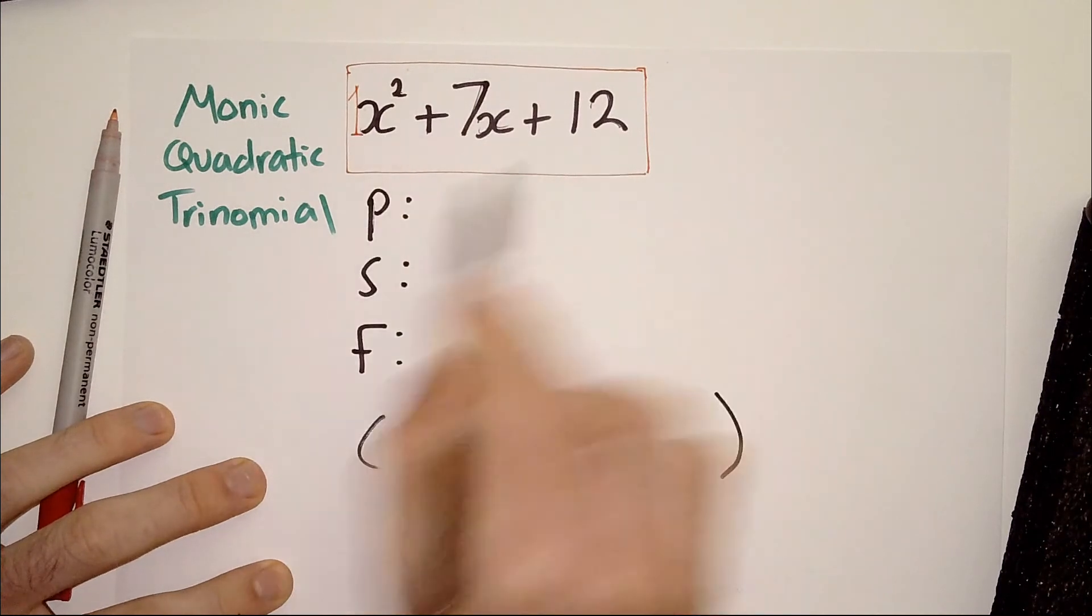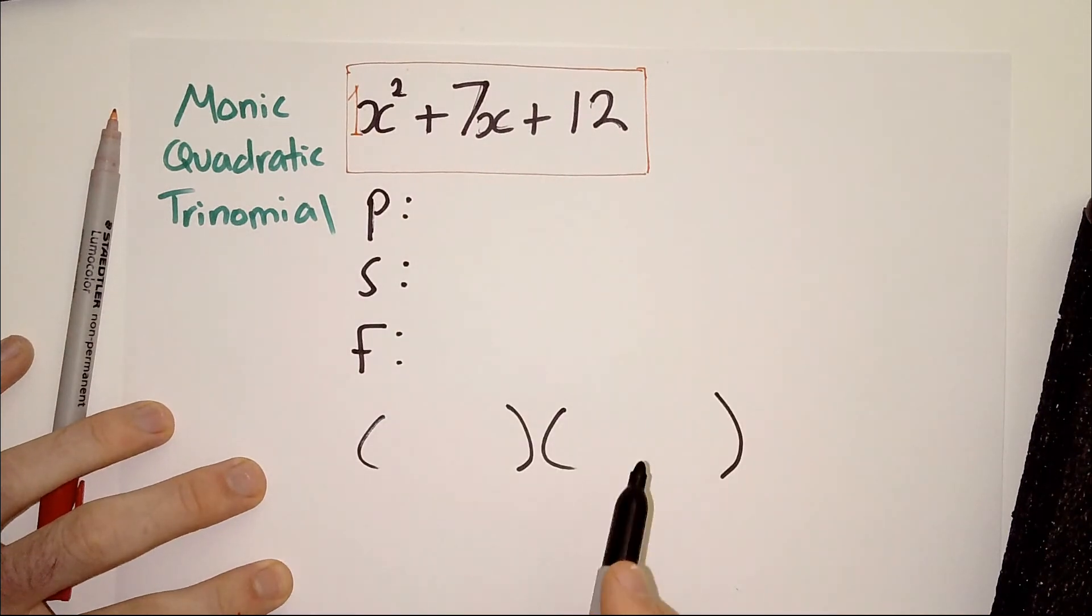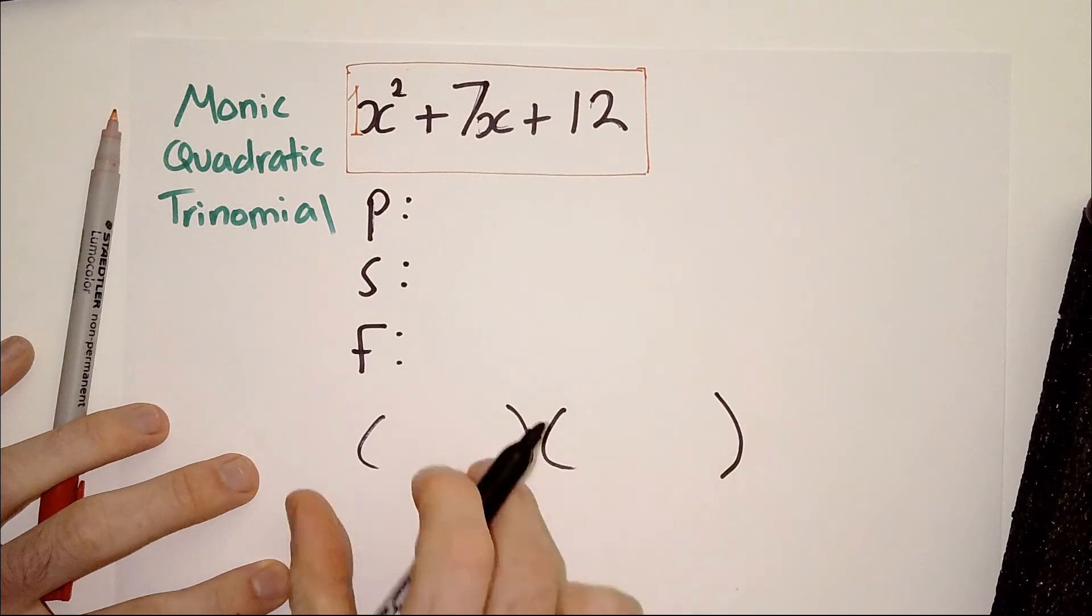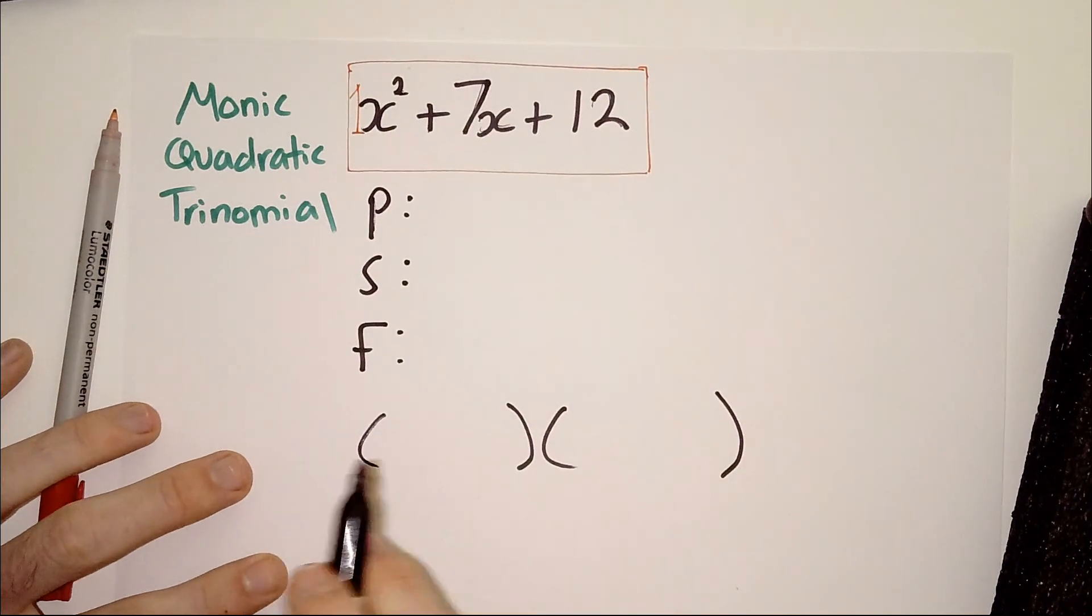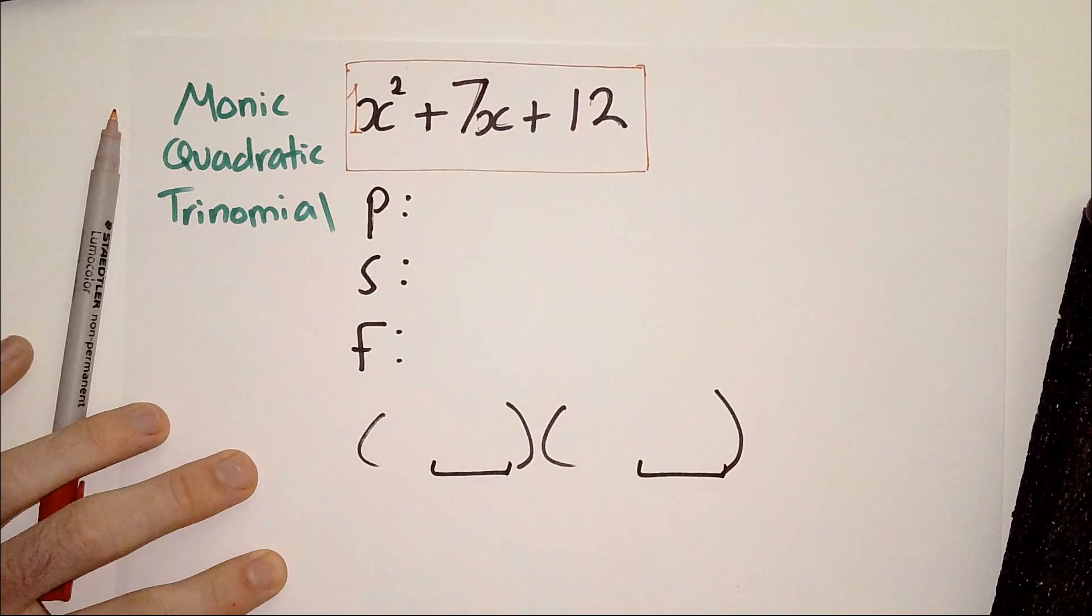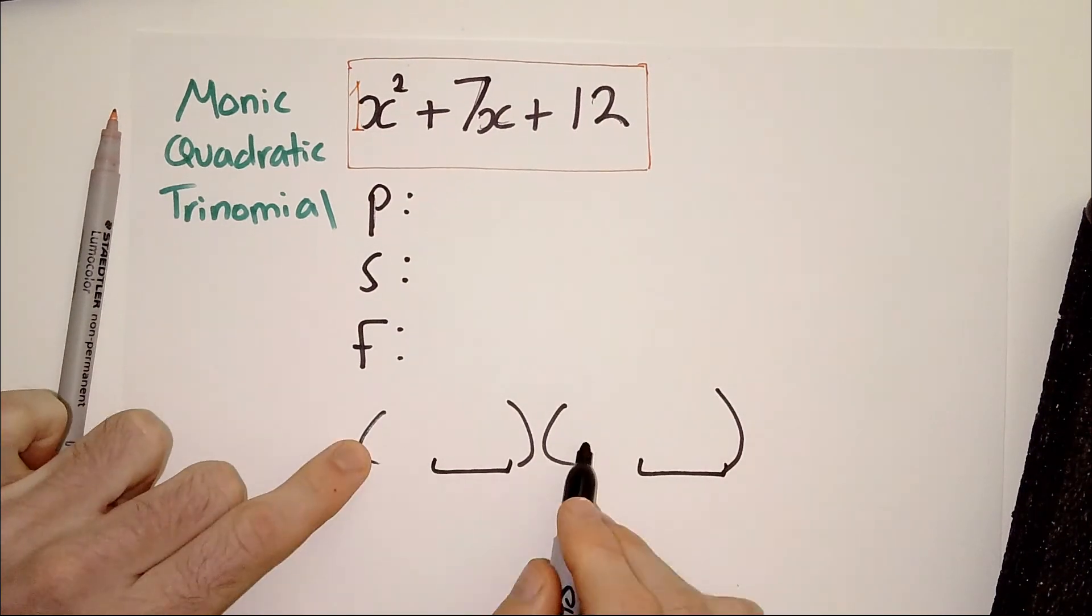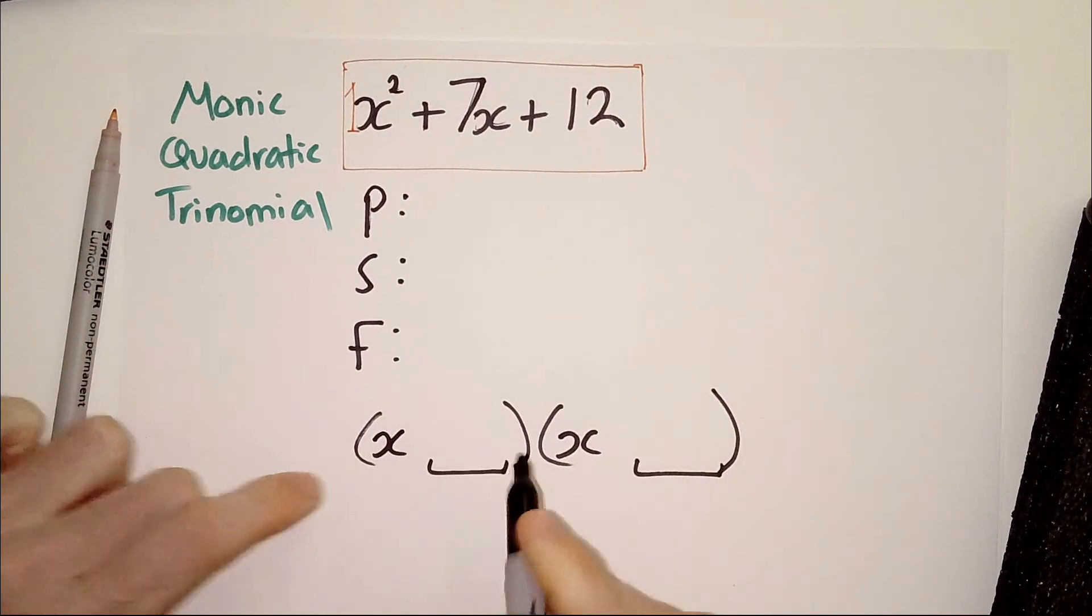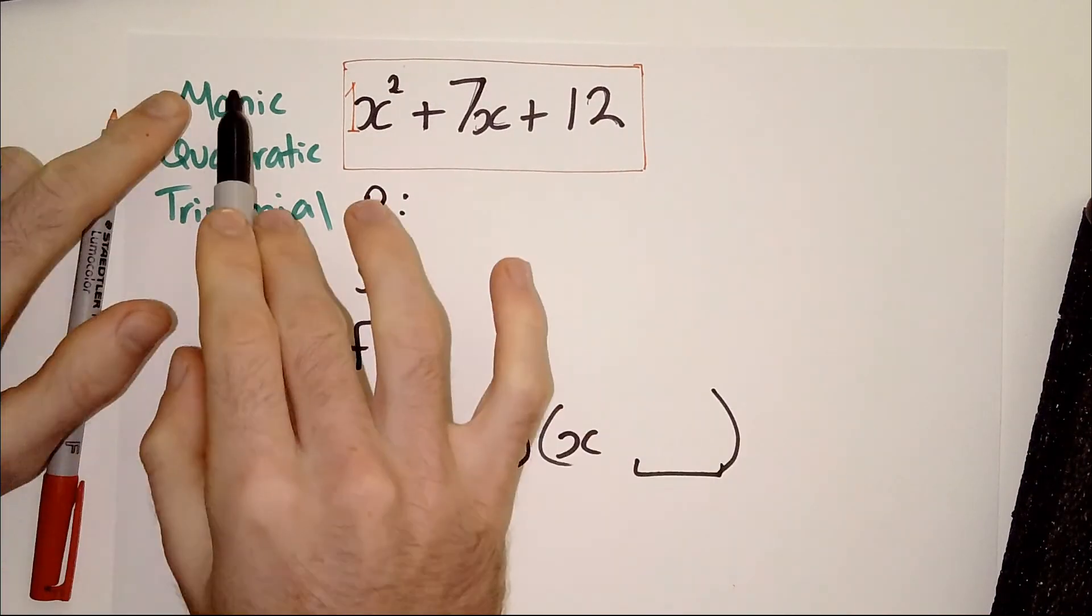We can set it up down here. We know that this expression is going to be put into brackets because that's what factorizing is. We're going to be using factors. Okay. And they're going to go here. Now, we're trying to figure out what two terms go here.